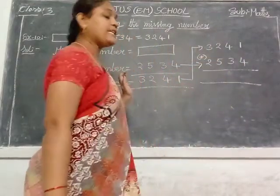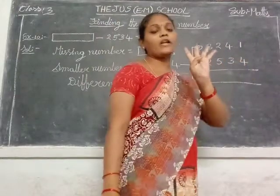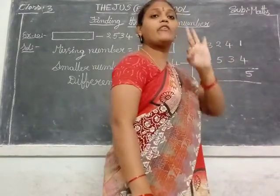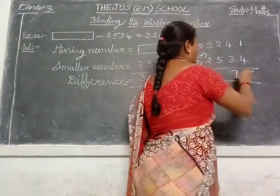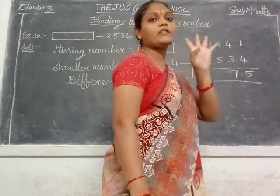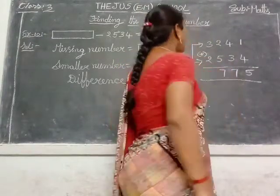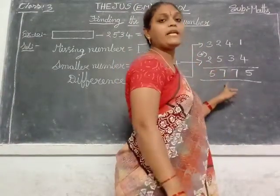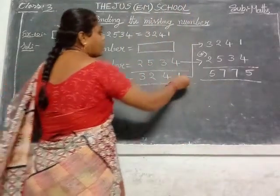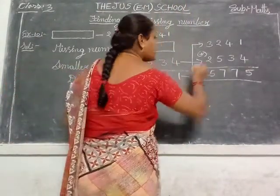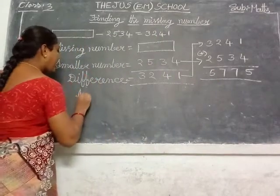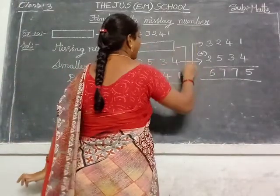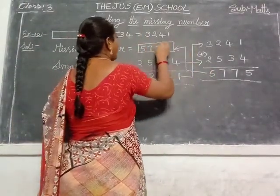You do the addition here. The answer is 5,775. So the missing number is 5,775. Write here the answer: 5,775.